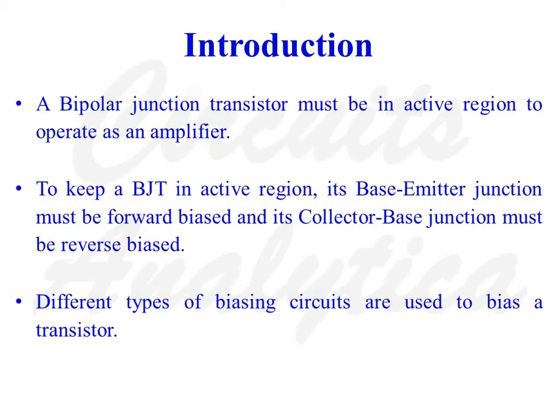A bipolar junction transistor must be in the active region to operate as an amplifier. To keep a BJT in the active region, its base-emitter junction must be forward biased and its collector-base junction must be reverse biased. Different types of biasing circuits are used to bias a transistor.